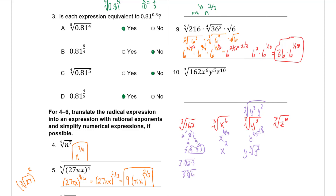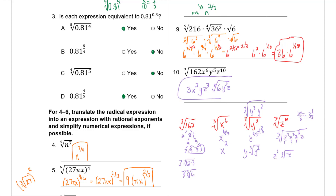For z to the tenth: think of how many z-cubes you have. 10 divided by 3 goes three times with one remainder, so three z's come out as z cubed and one z stays inside. Putting it all together: on the outside we have 3, x squared, y, and z cubed; inside the cube root we have 6, y squared, and z. That is our final answer.